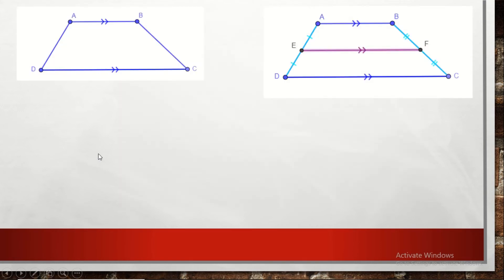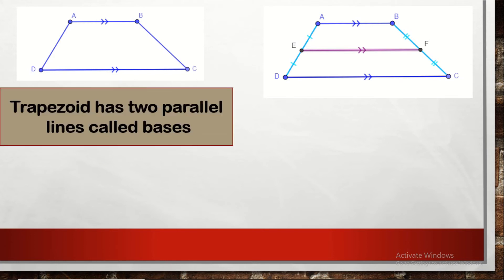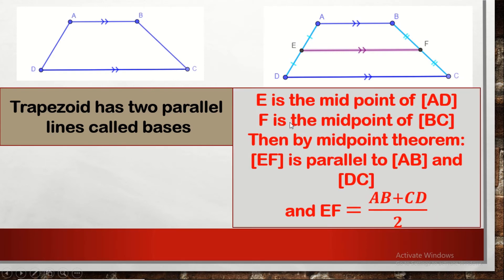Now let's look at the midpoint theorem for trapezoids. A trapezoid is a quadrilateral that has two opposite sides parallel to each other, called the bases. In a trapezoid, if we take the midpoints of the non-parallel sides, the segment joining these midpoints is the midsegment. It will be parallel to the two bases AB and CD, and its length EF will equal the length of AB plus the length of CD, all over 2.